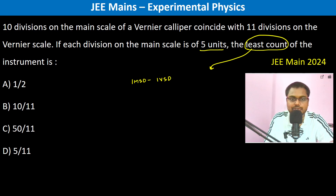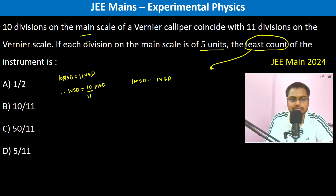10 main scale divisions is equal to 11 vernier scale divisions, so therefore 1 vernier scale division is equal to 10/11 main scale divisions. Therefore, the least count becomes 1 main scale division minus 10/11 main scale divisions, which equals 1/11 of a main scale division.